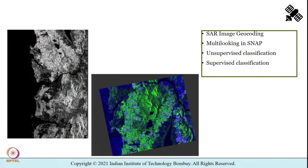Hello and welcome to part 2 of Tutorial 6: Synthetic Aperture Radar Image Classification. In part 1 we learned how to perform SAR image preprocessing using the SNAP toolbox, including how to open the image and calibrate the data. Radiometric calibration converts backscatter intensity as received by the sensor to normalized radar cross section, or sigma naught imagery.